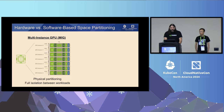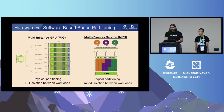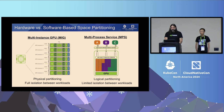Zooming in on space partitioning, there are two types available for GPUs. One is hardware partitioning through multi-instance GPU, or MIG, which physically partitions a full GPU into mini-GPUs with full isolation between workloads. In contrast, multi-process service, or MPS, is a software-based space partitioning method that allows logical partitioning but with limited isolation — if one workload crashes, it could bring down others, which is not possible with MIG.